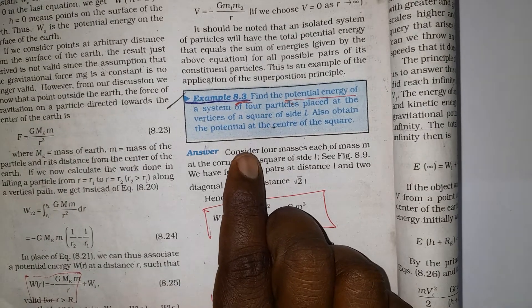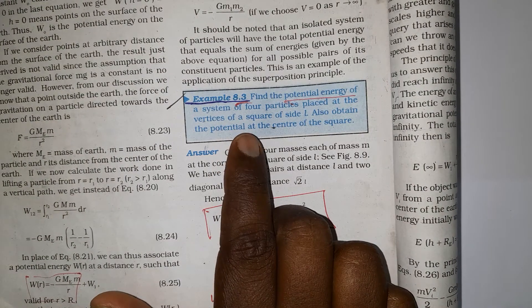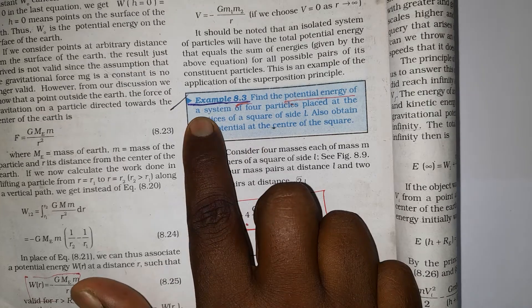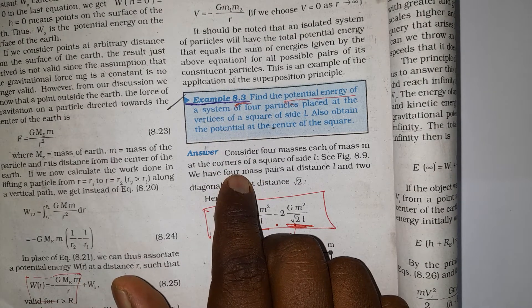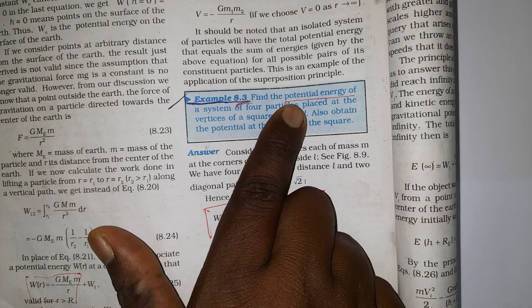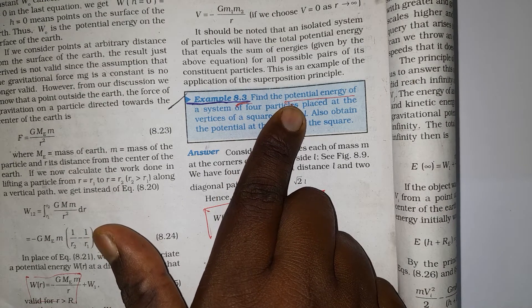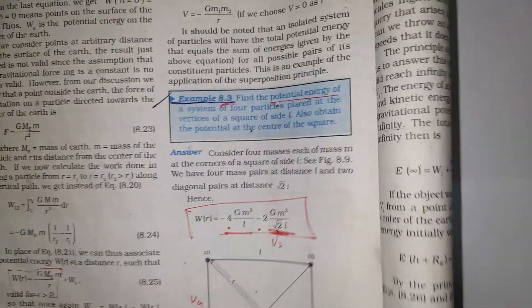Today we are going to discuss a class 11 physics NCERT example problem solution. It is example problem 8.3. The question asks what is the potential energy when the system is placed in a square shape.